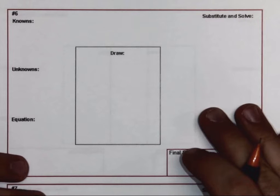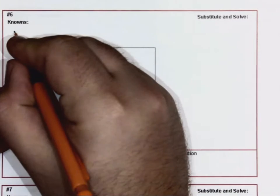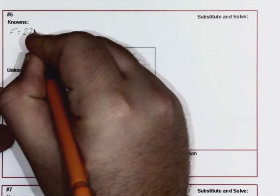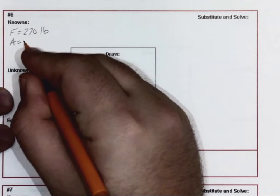When we start to go into the problem setting it up, here's number six. So knowns: our force is 270 pounds, area is given to us.